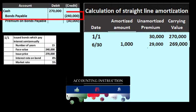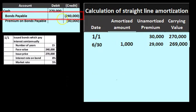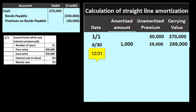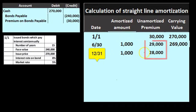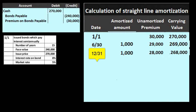The unamortized premium goes from $30,000 down by $1,000 to $29,000 after the first period. The carrying value is then $240,000 plus $29,000. The next period, another $1,000 reduction, straight-line, so the premium goes from $29,000 to $28,000, and the carrying value is $240,000 plus $28,000.